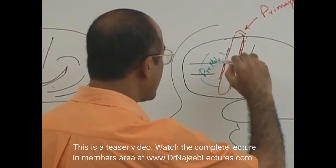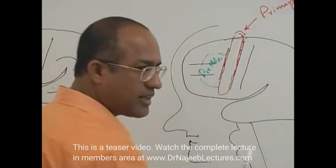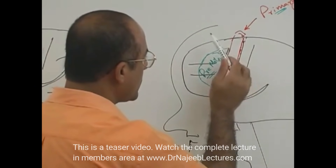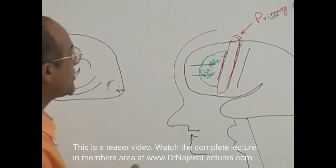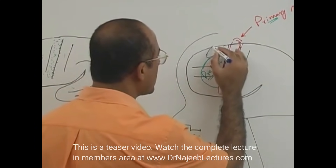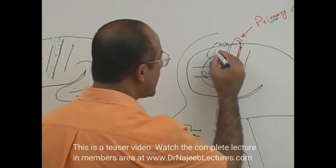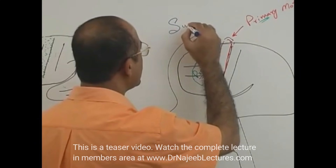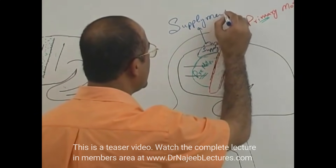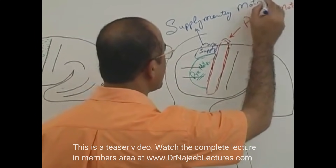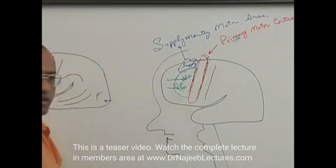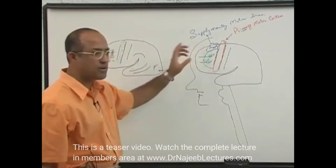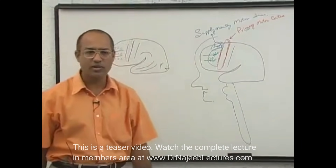In front of the primary motor cortex is the premotor area, and researchers also discovered another area which extends to the medial side — this is called the supplementary motor area. So there are three motor areas: primary motor cortex, premotor cortex, and supplementary motor cortex. Knowing they exist is not enough — you must understand how they differ from each other.